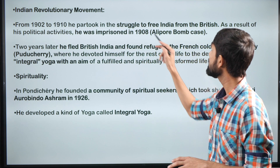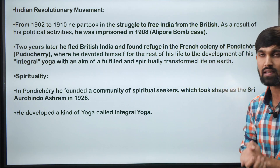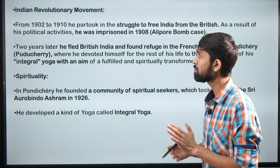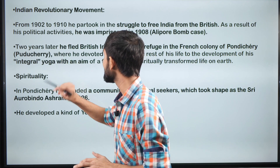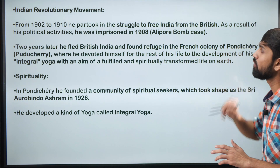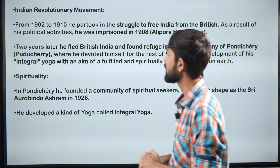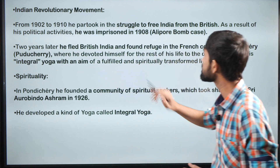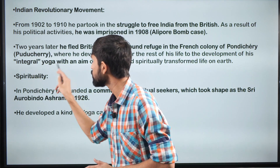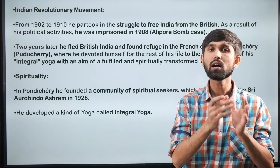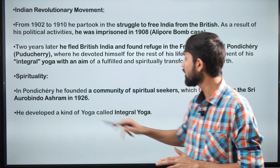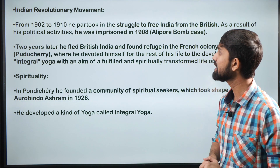As a result of his revolutionary activities, he was imprisoned in the 1908 Alipur bomb case — an important fact for prelims questions. Two years later, he fled British India and found refuge in the French colony of Pondicherry, now named Puducherry, where he devoted himself for the rest of his life to the development of his Integral Yoga — a unique kind of yoga practice that he developed.